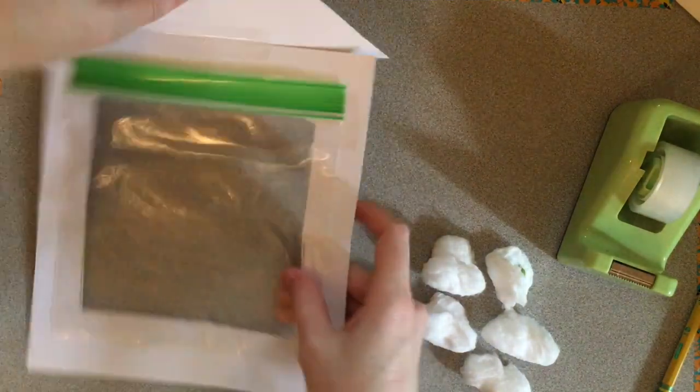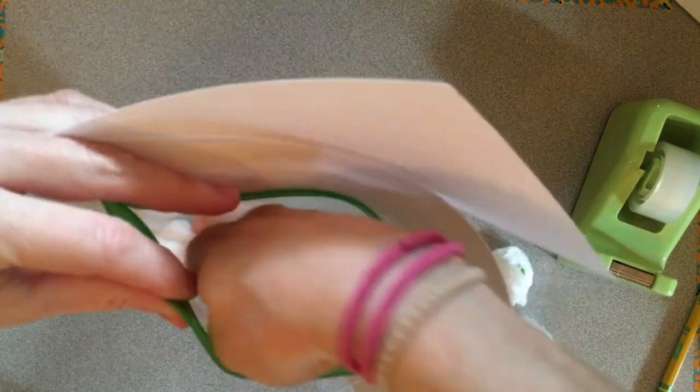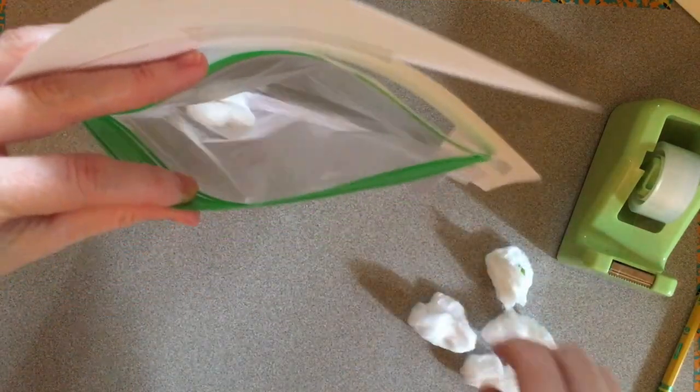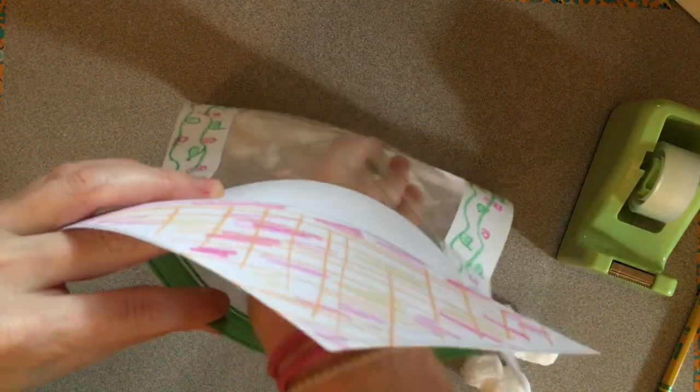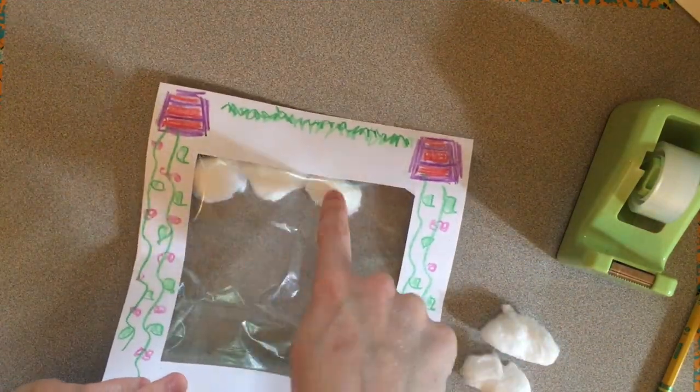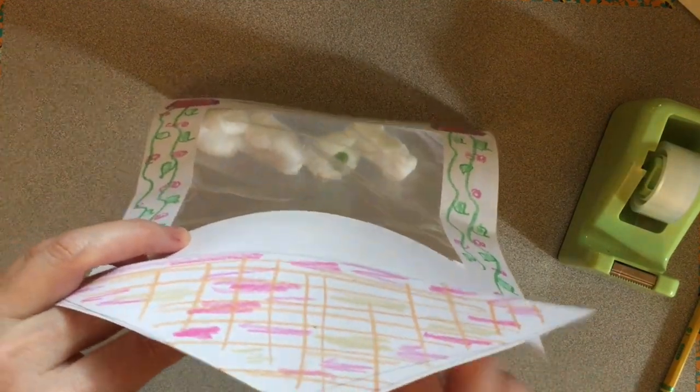Now that you have all the seeds assembled, it's time to put them in the greenhouse. So open your Ziploc bag right up there at the top. Place each little cotton ball with the seed at the bottom. And you want to spread them out across the bottom so that they have some room to sprout.